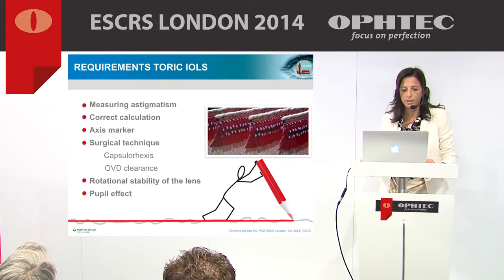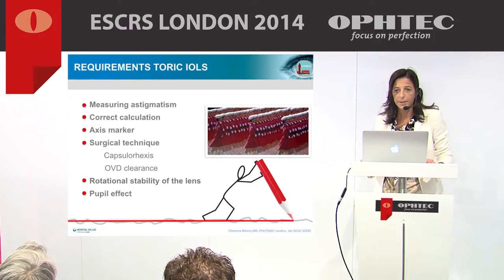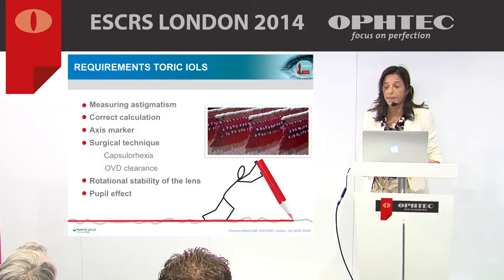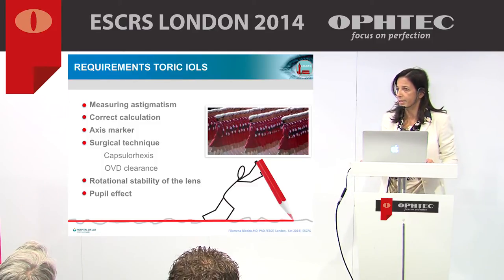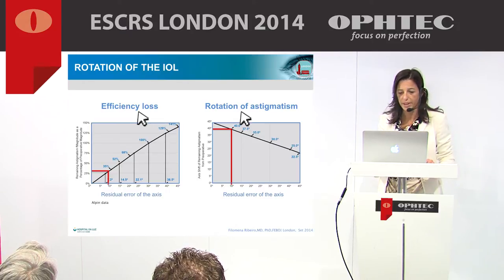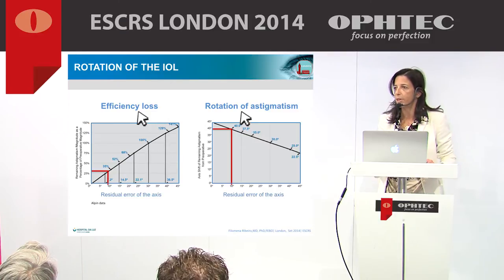Because early toric models were rotationally unstable, their correcting effect was limited. Stable and effective toric IOLs implanted in the capsular bag are therefore an important advancement in modern cataract surgery. As you can see from the Alpine data, for a 10-degree rotation there is a significant loss of effectiveness, and astigmatism rotation 40 degrees apart causes further impact.